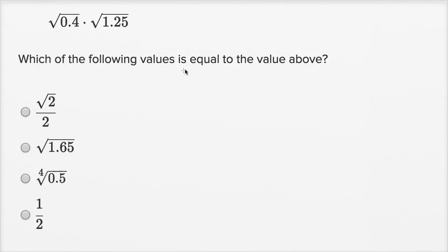Which of the following values is equal to the value above? We have the square root of 0.4 times the square root of 1.25.